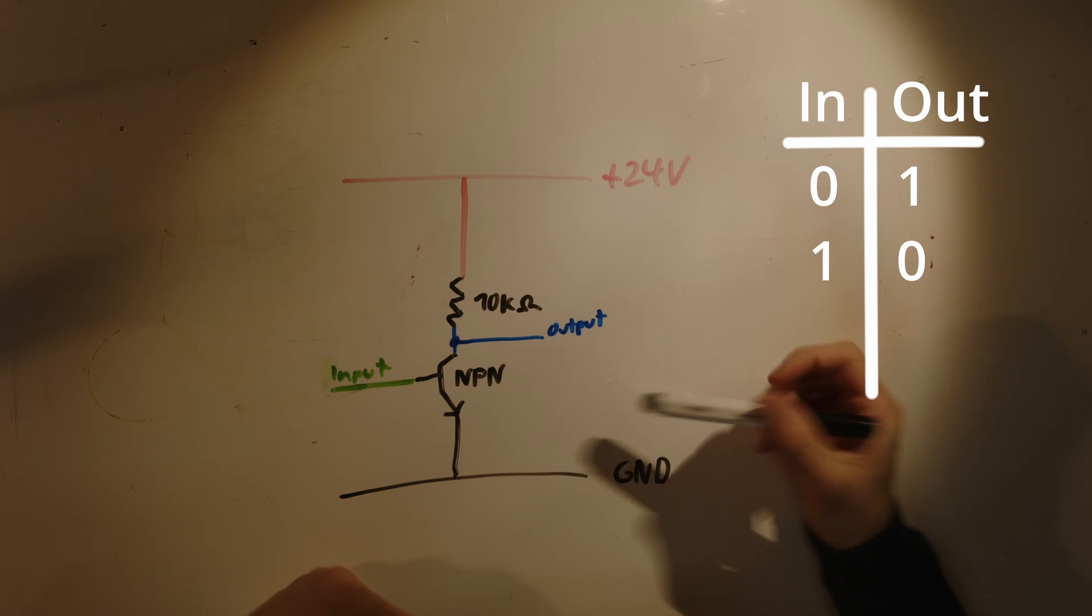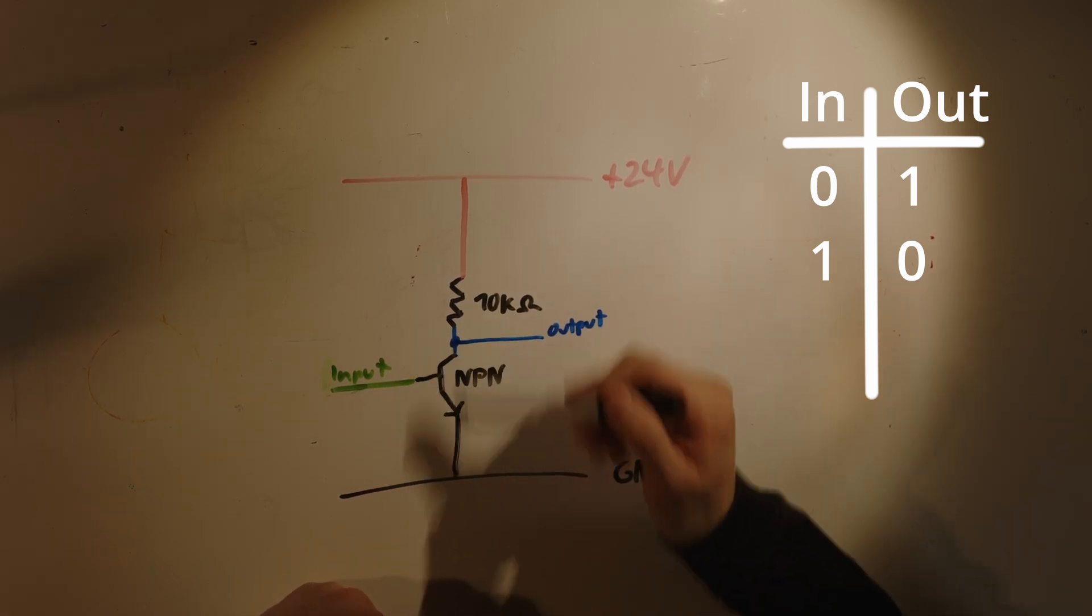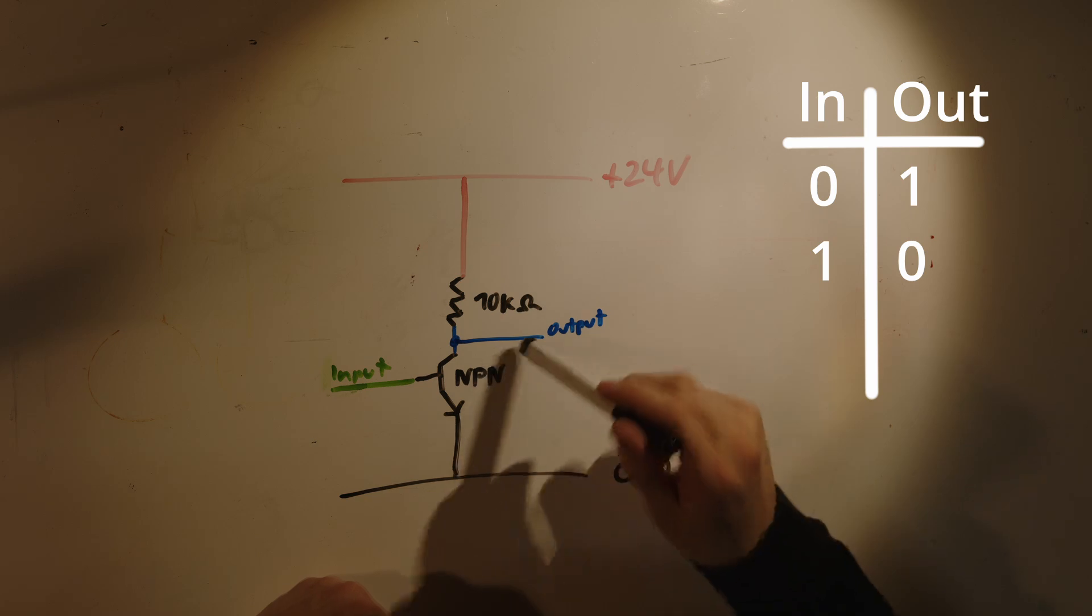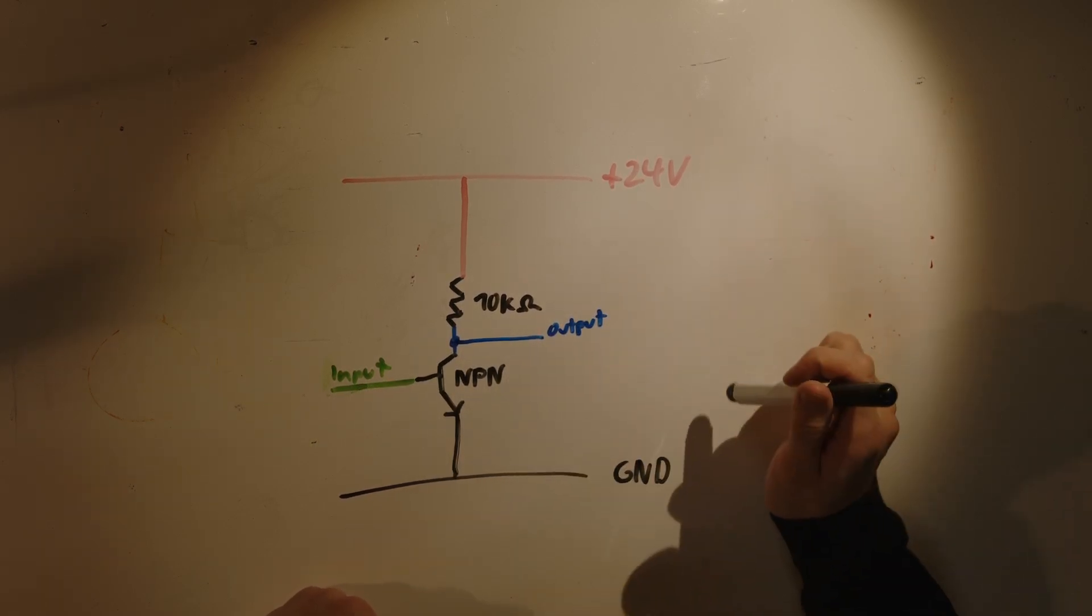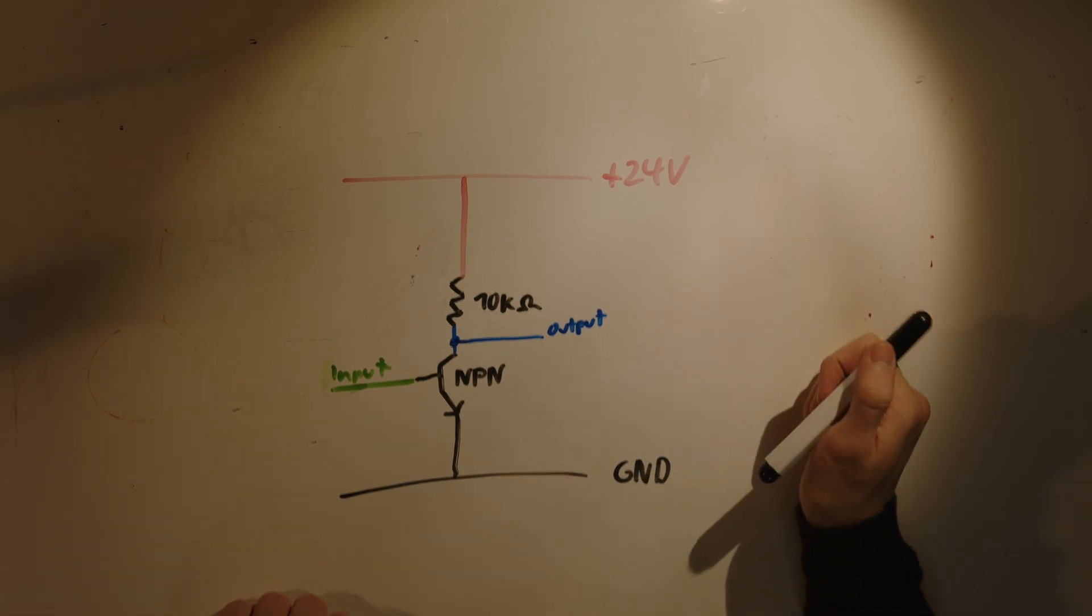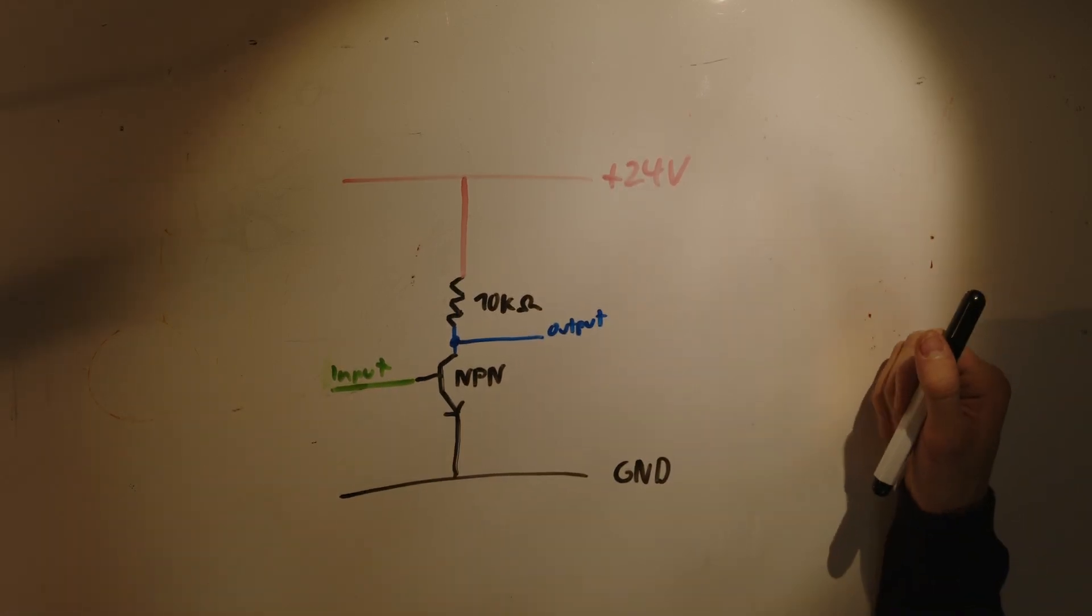So the current rather flows through the transistor because the way is easier. Current is lazy so the current rather goes through the transistor which is the easier path than through the circuitry that comes at the output. So that's the easiest of all the three gates. It's just the transistor and a resistor. Easy peasy.